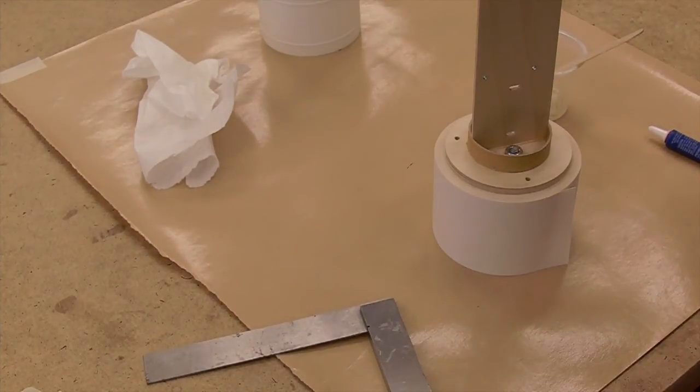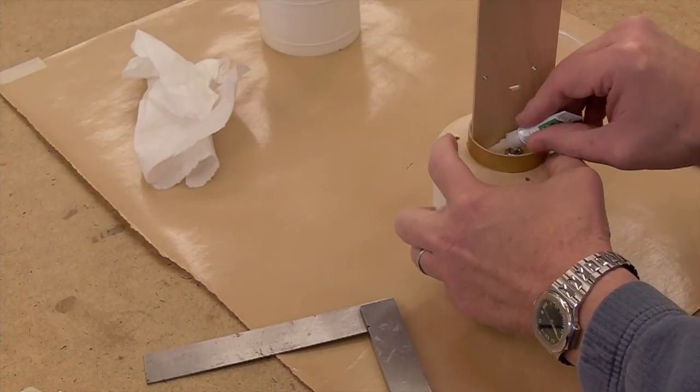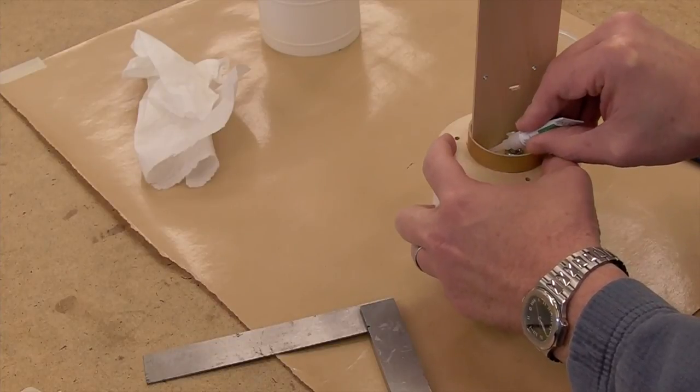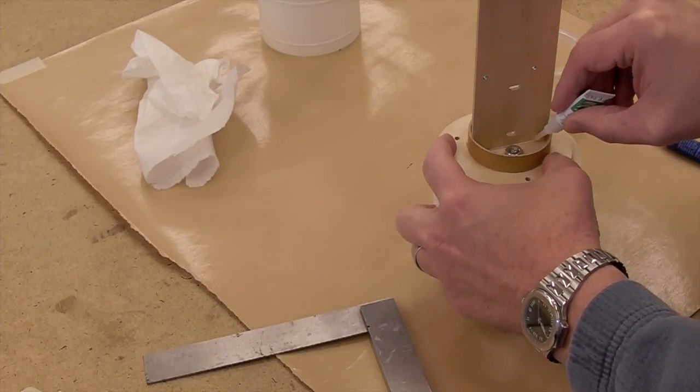Then use a few drops of CA to tack the plate in place. This just holds it so when we're epoxying, things won't move around.